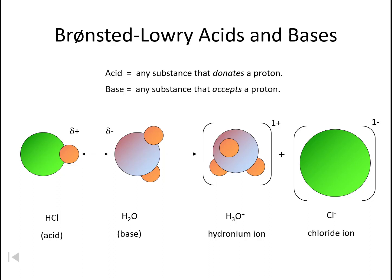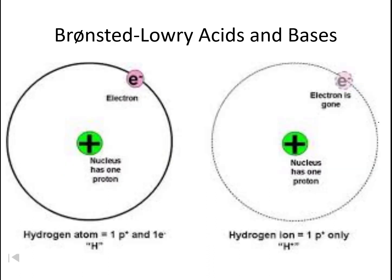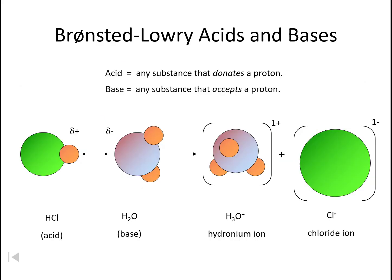Now where does this proton come from? The proton itself is just a hydrogen ion. Because hydrogen only has one proton and one electron. If hydrogen forms an ion where it gives away its electron, all it has left is a proton. So that proton being donated and accepted is really a hydrogen ion.